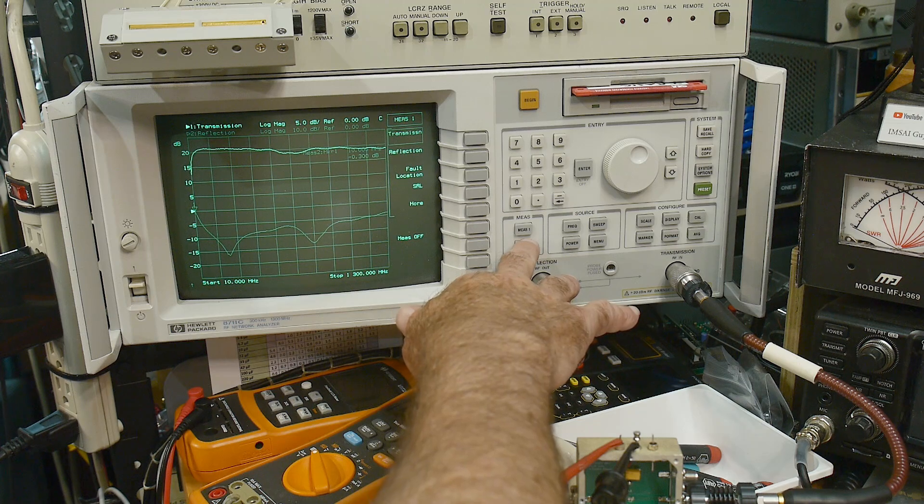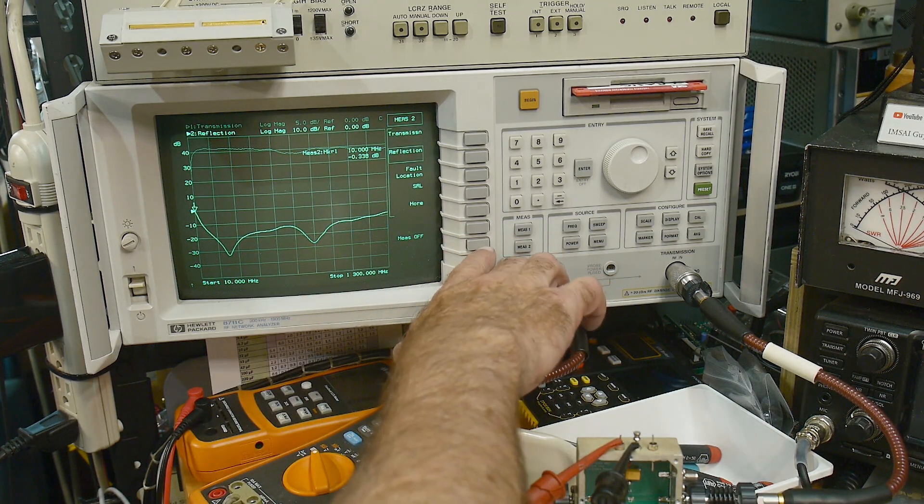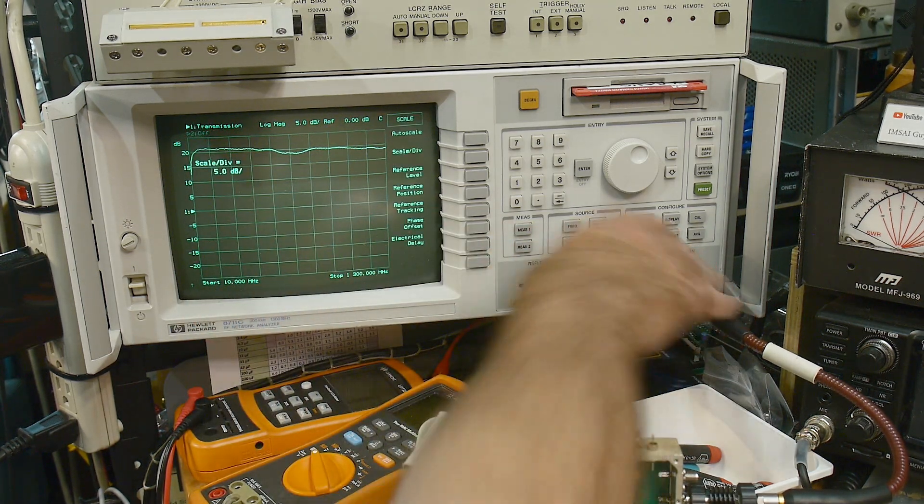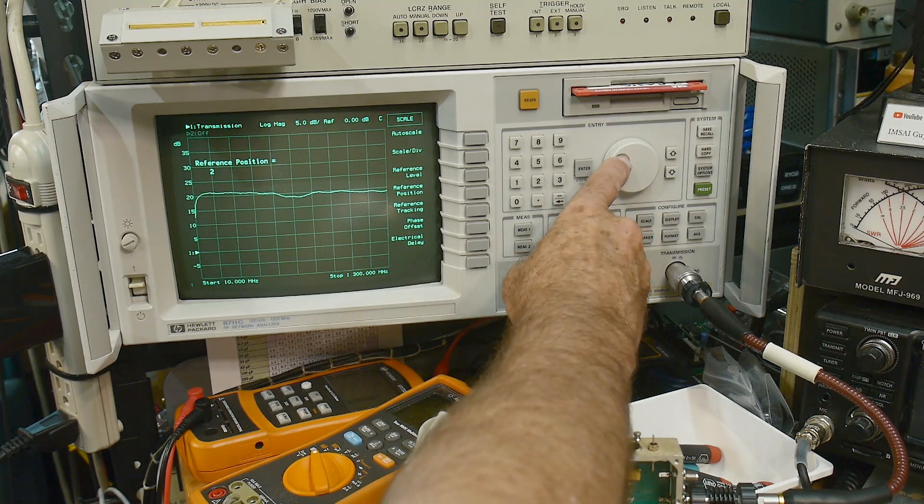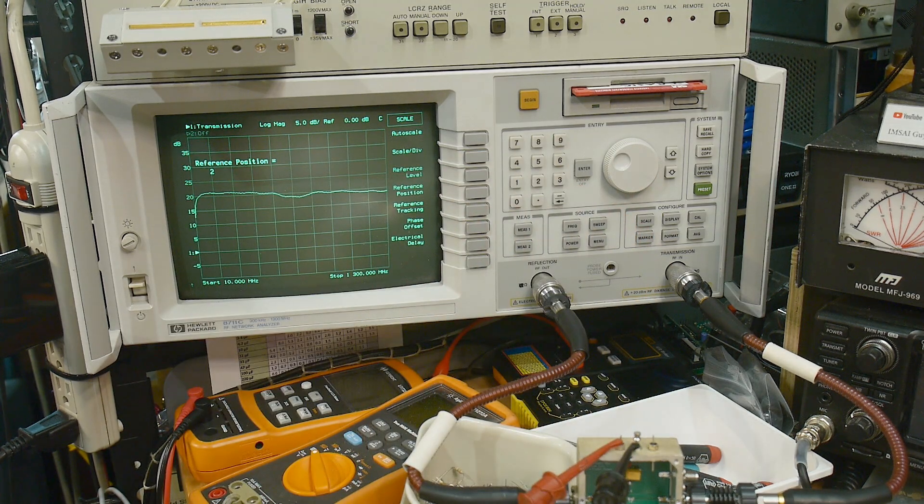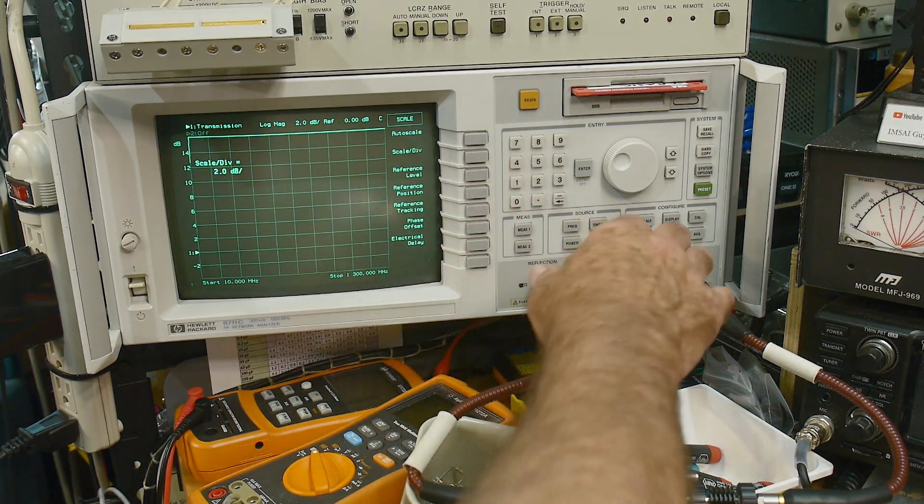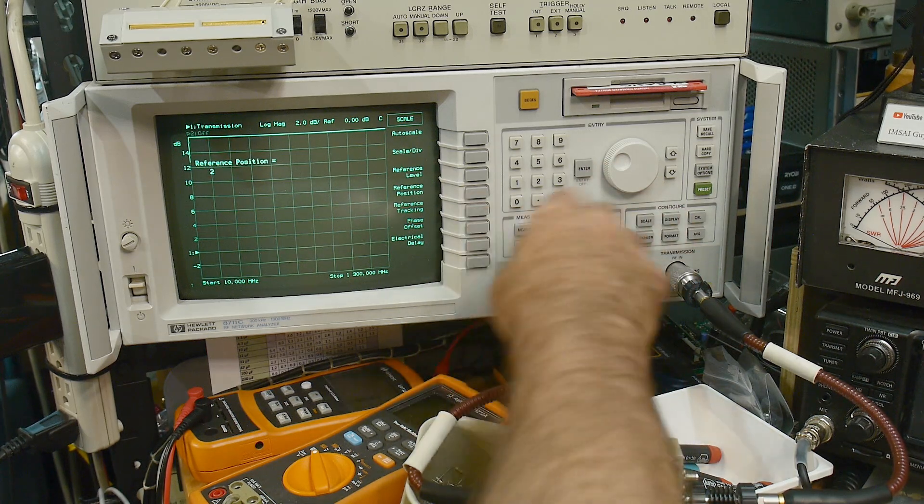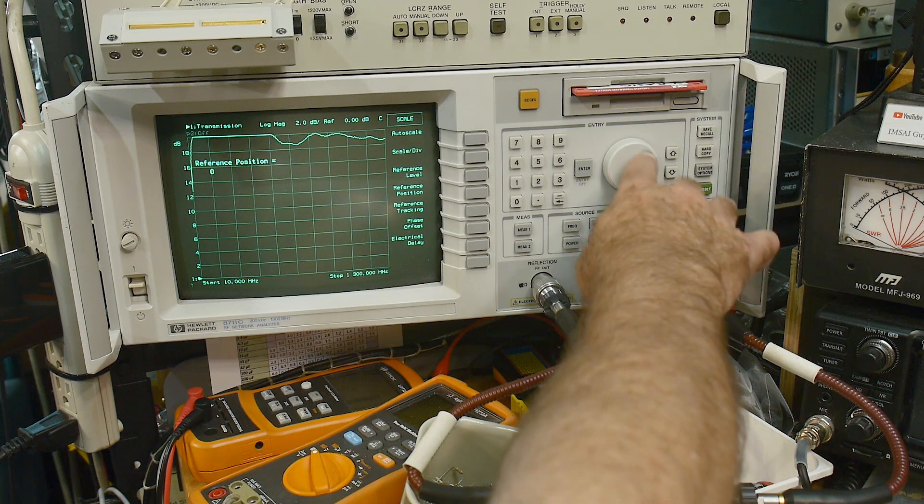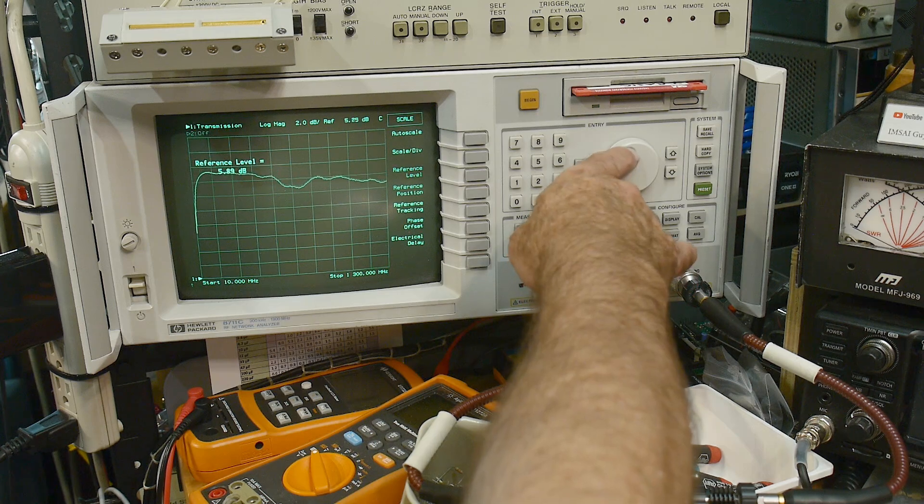Let's go back to measurement one here. You can see both at the same time. Let's turn measurement two off and scale reference position. We can move it down here too. We can see this nice flat trace.